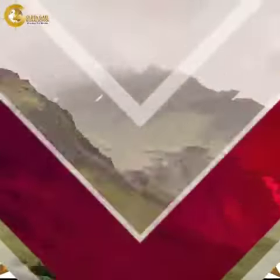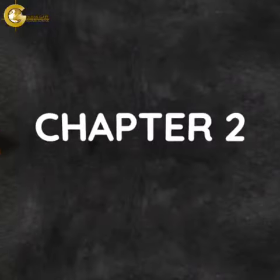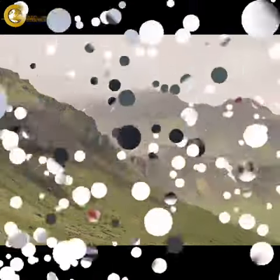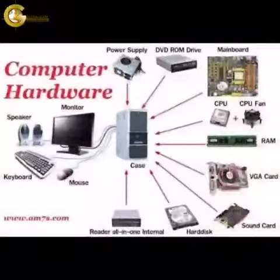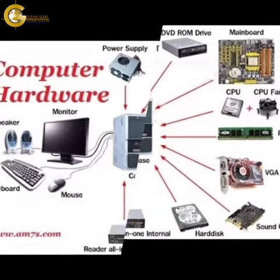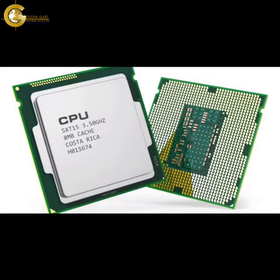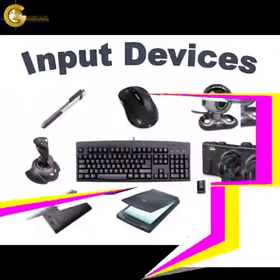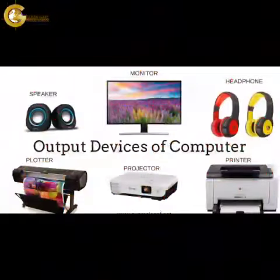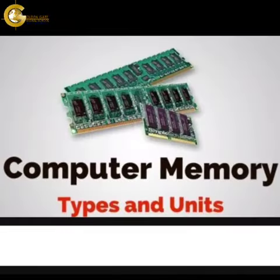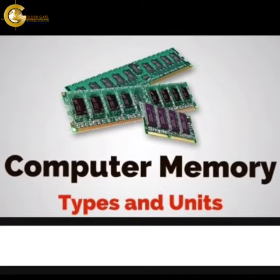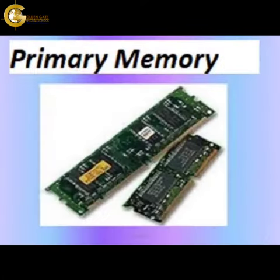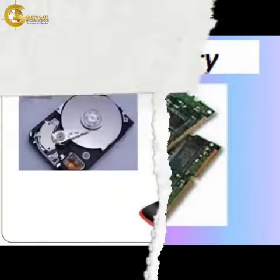Hello students, let's begin chapter number two: Types of Hardware. Hardware of a computer system comprises of the following: CPU, memory, input devices, and output devices. Memory in a computer system is of two types: primary or main memory, and secondary or auxiliary memory.